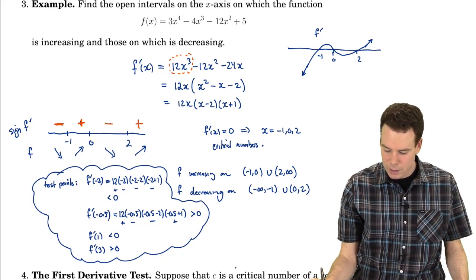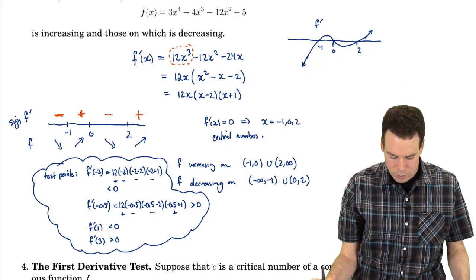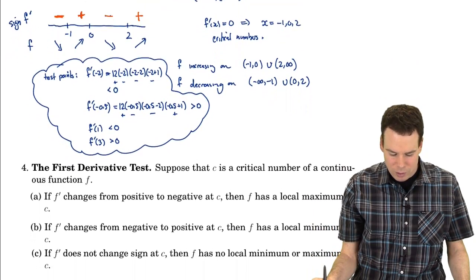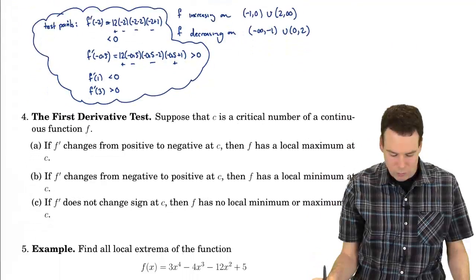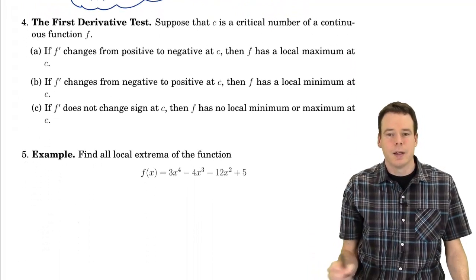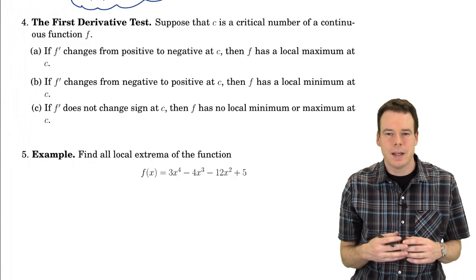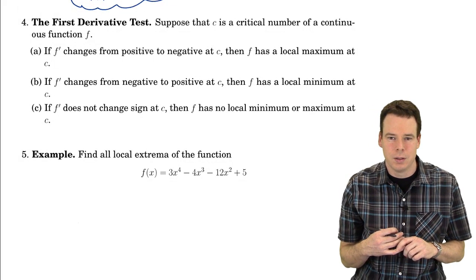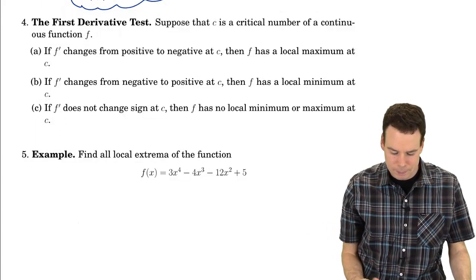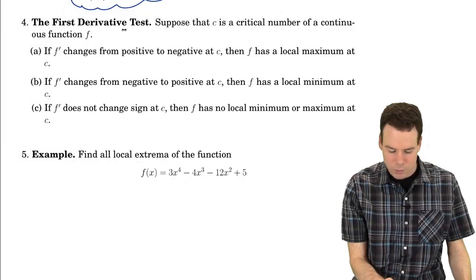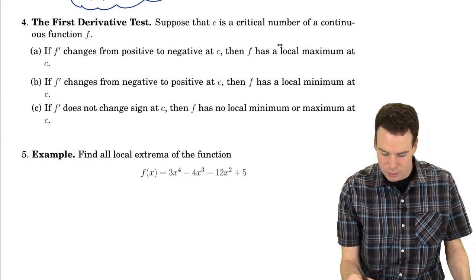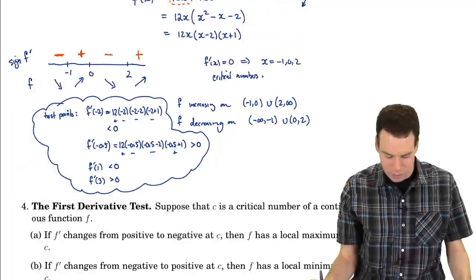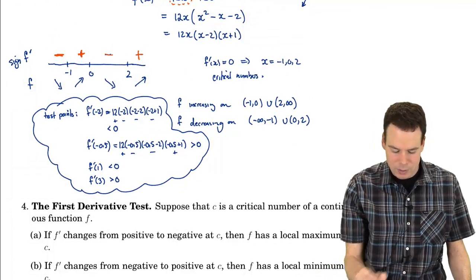From that, I want to move on to the First Derivative Test. In our preliminary discussion, we were talking about the First Derivative Test as a way to classify a critical number as either a local max or a local min — or perhaps neither. The idea is really present in the previous example.